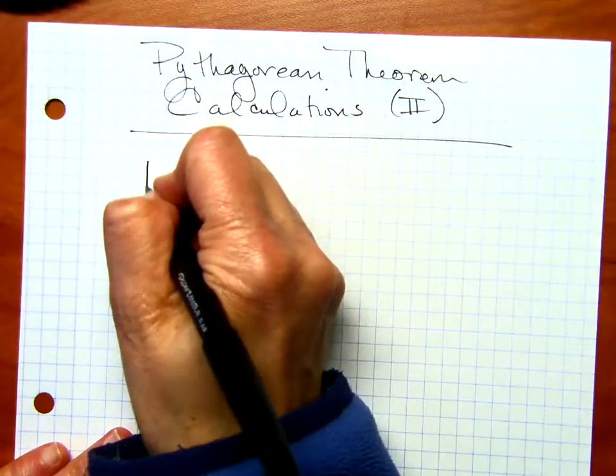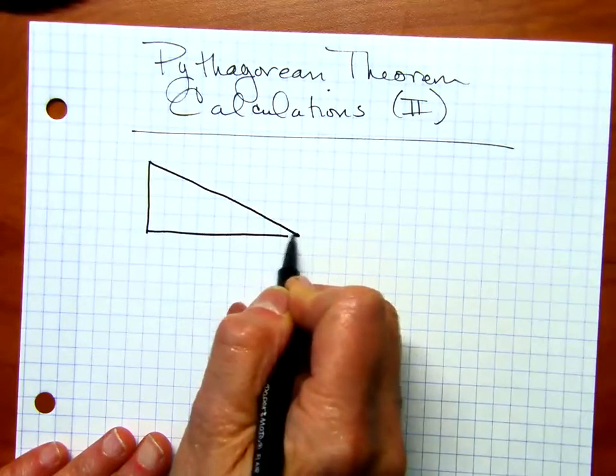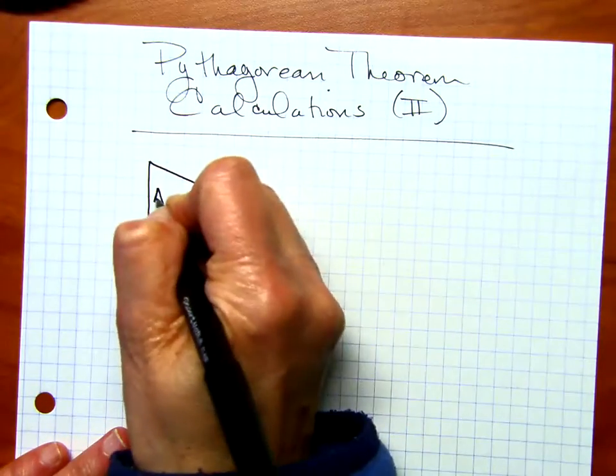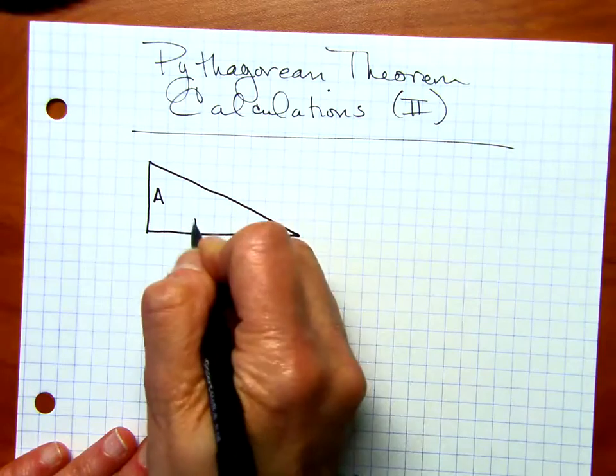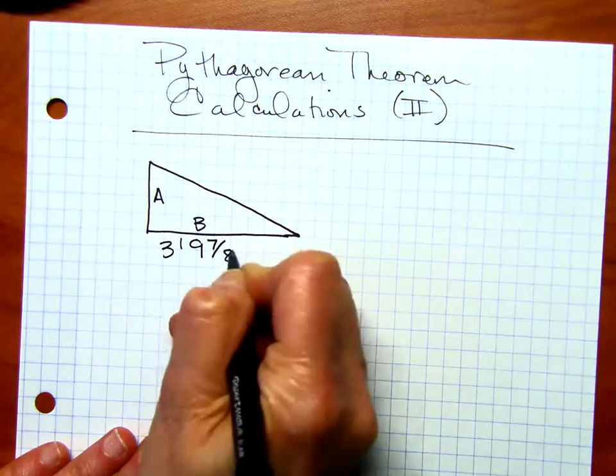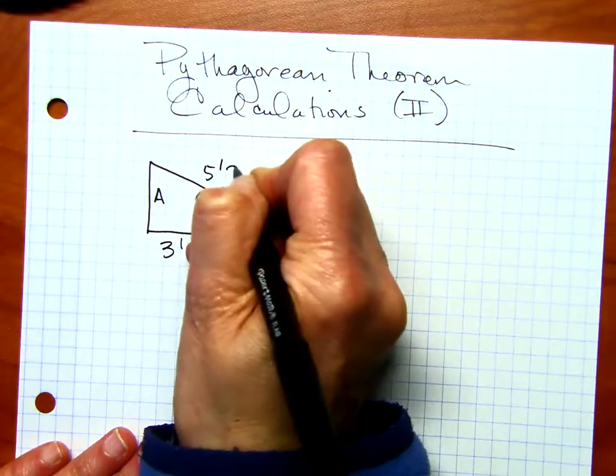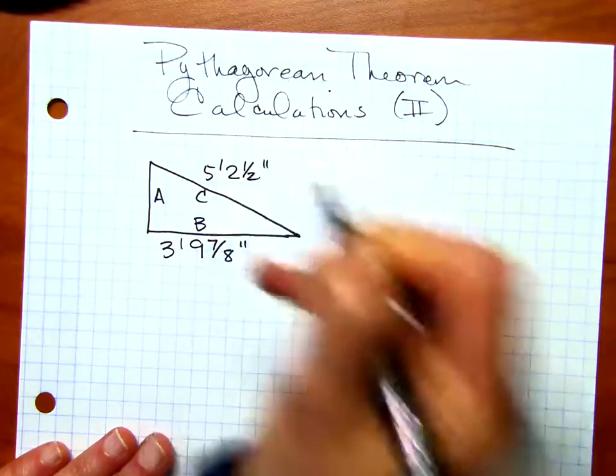Anyway, for this first problem, this is going to be a right triangle, and we're going to solve for A. And our B side is going to equal 3 feet 9 and 7 eighths of an inch, and then the C side will be 5 feet 2 and 1 half inch.